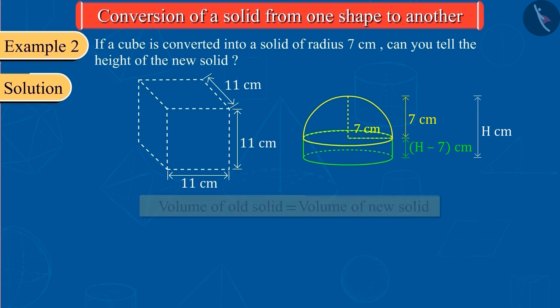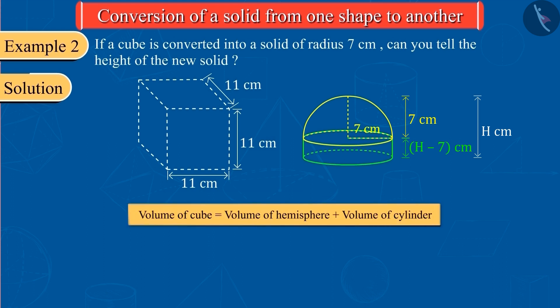We know that while converting one solid into another solid, the volume of both solids remains the same. So, the volume of the cube here will be equal to the sum of the volumes of the hemisphere and the cylinder.